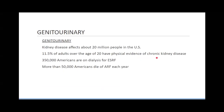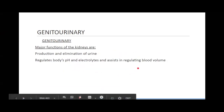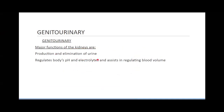Kidney disease affects about 20 million people in the US. Fifteen percent of adults over age 20 have physical evidence of chronic kidney disease. 350,000 Americans are on dialysis for end-stage renal failure. Dialysis replaces the function of the kidneys. More than 50,000 people die each year from this. The kidneys produce and eliminate urine by eliminating electrolytes, and this also helps regulate the body's pH and blood pressure — very important.